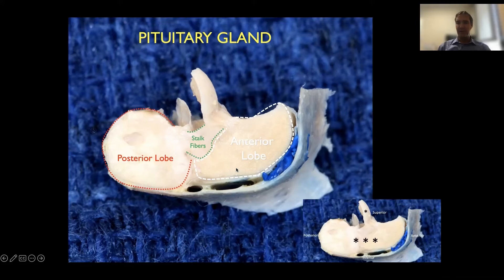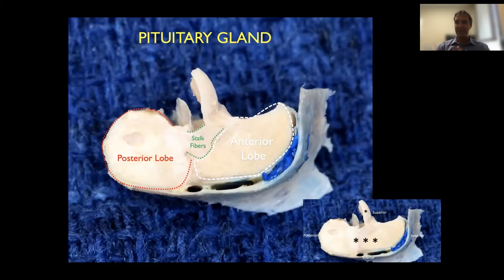As you probably studied in embryology, the anterior lobe and the posterior lobe have different embryonic origins. As they come together in development, there is a cleft in between called Rathke's cleft, where sometimes you've heard about the Rathke's cleft cyst — a type of cyst that forms in this cleft between both lobes. And then you have the pituitary stalk.